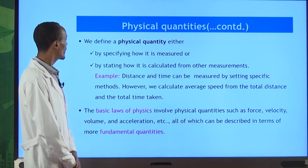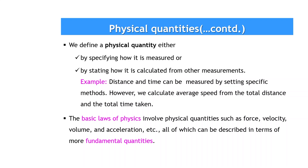We define a physical quantity either by specifying how it is measured — meaning you are directly measuring it — or by stating how it is calculated from other measurements. Those types of physical quantities that are measured directly are known as fundamental or basic physical quantities.